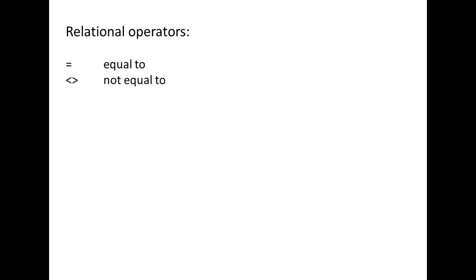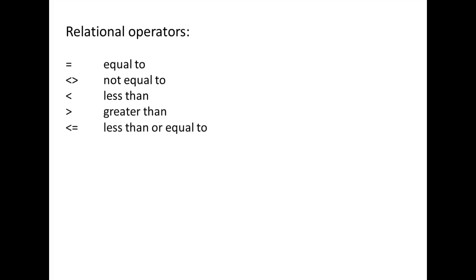Relational operators allow us to make these comparisons. There are six relational operators. The equal symbol means equal to. VBA uses this symbol for assigning values to variables and it is also the equal to relational operator. The less than symbol followed by the greater than symbol means not equal to. The less than symbol alone means less than, the greater than symbol alone means greater than. The less than symbol followed by the equal symbol means less than or equal to, and the greater than symbol followed by the equal symbol means greater than or equal to.